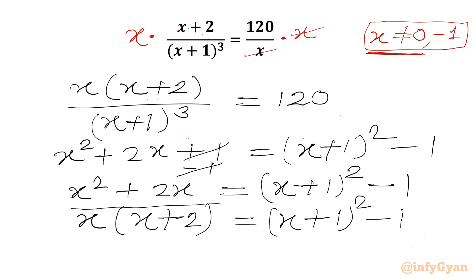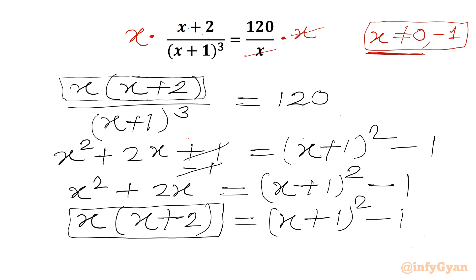We have x times (x + 2) here and also x times (x + 2) in our equation. Let's replace it, so we can write [(x + 1)² − 1] / (x + 1)³ equal to 120.